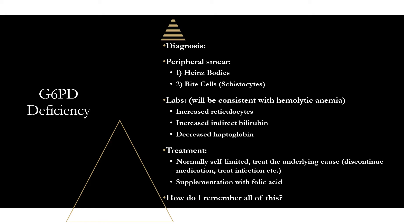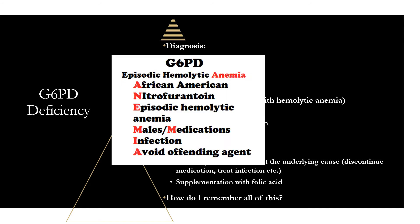A mnemonic to remember key G6PD points — use ANEMIA: A for African-American, most commonly affected; N for nitrofurantoin, a common causative medication; E for episodic hemolytic anemia, what G6PD leads to; M for males, X-linked recessive so more common in males; M also for medications as a common cause; I for infection, the most common cause; A for avoid the offending agent, the primary treatment approach.